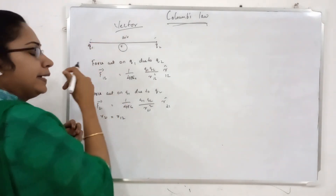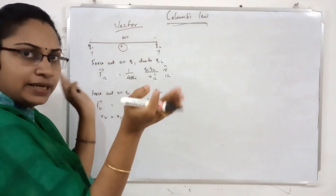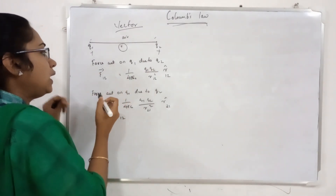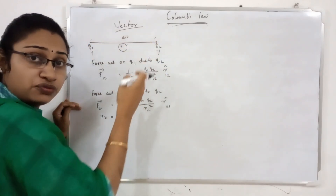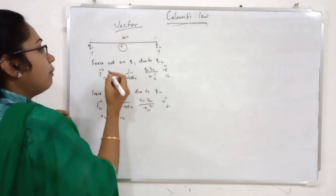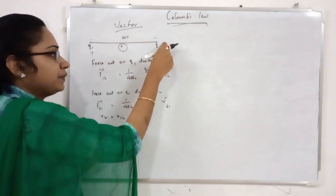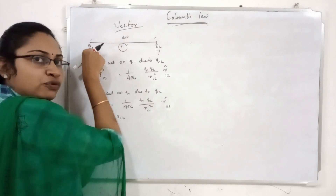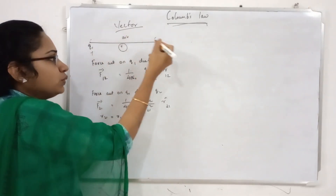Let's take a look at two charges. If you have a positive charge, you may have a like charge; you may have a negative charge. The two charges exert a force on each other. The force acting on Q1 due to Q2 — we call it F1,2. Force act on Q1 due to Q2, we call F1,2.